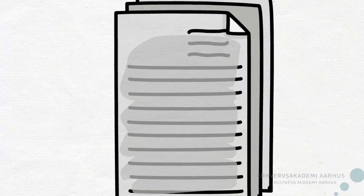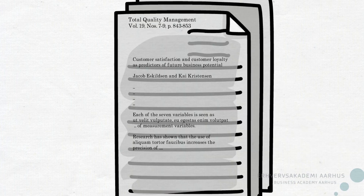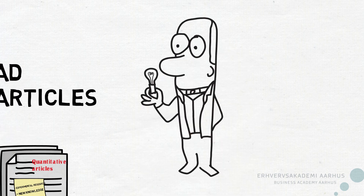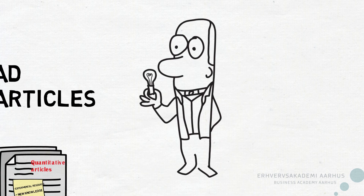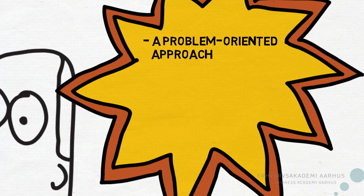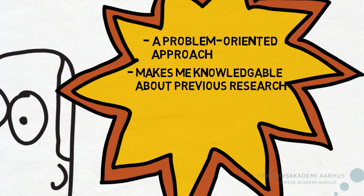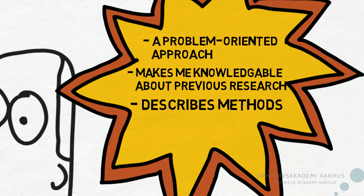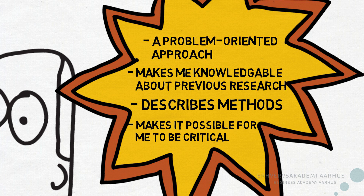Most often, academic articles are written in high-level English, describing a totally new topic and introducing a host of foreign words. So why start reading a text that will possibly confuse you? Because an academic article focuses on a specific problem — which is not always the case with textbooks. It makes you knowledgeable about what has previously been researched, describes specific analysis and research methods, and gives you the possibility to reflect on things.